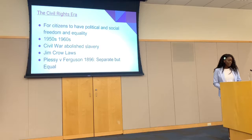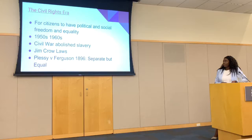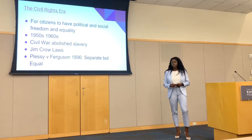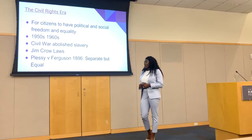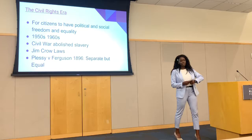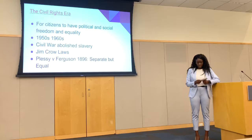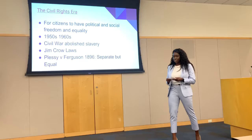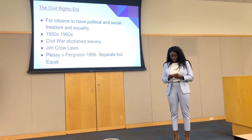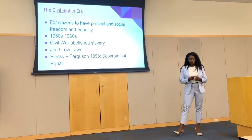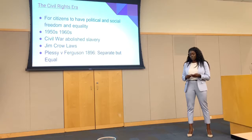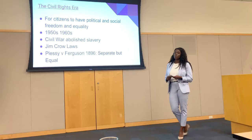The civil rights era was a fight for citizens to have political and social freedom and equality. It happened during the 1950s throughout the 1960s. After the Civil War, which abolished slavery, Black people were still being mistreated and fighting injustices based on their race. Jim Crow laws were enforced, going into effect to house segregation in bathrooms, water fountains, and the back of the bus. Interracial marriage was still illegal, and voting was limited because of literacy tests. Plessy v. Ferguson was a Supreme Court decision of 1896 that said spaces could be separate but equal — though we know there were not a lot of funds or resources provided for African Americans in the spaces they occupied.